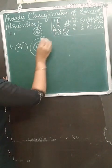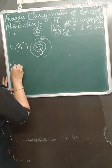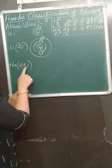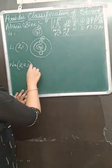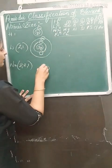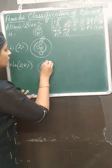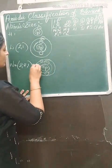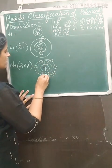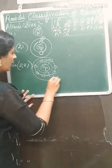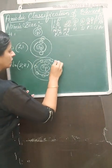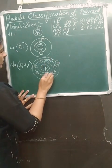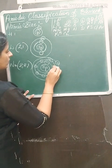Next we have sodium. Electronic configuration is 2, 8, 1 — that is 2 plus 8 plus 1 equals 11. Nucleus has 11 protons. First shell has 2 electrons, second shell has 8 electrons, and the third shell has 1 electron.